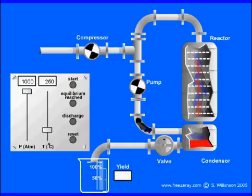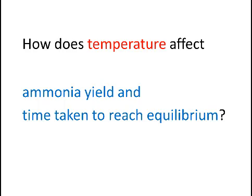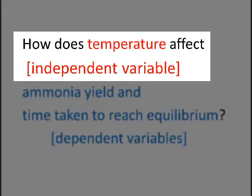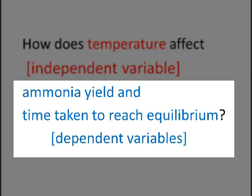Now, in this investigation, we're asking the question: how does temperature affect ammonia yield and time taken to reach equilibrium? So, again, we have one independent variable, temperature, and we have two dependent variables,